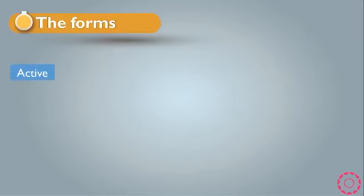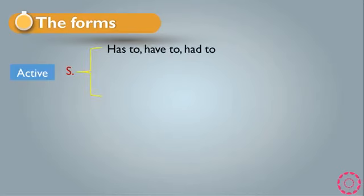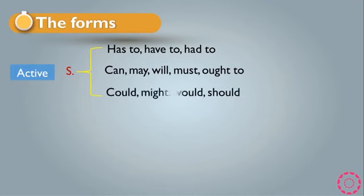First of all we have the rule of modal verbs in active form. The sentence starts with a subject, plus a modal verb: has to, have to, or had to, can, may, will, must, ought to, could, might, would, or should. So after the subject, one of these modal verbs should appear in the sentence.